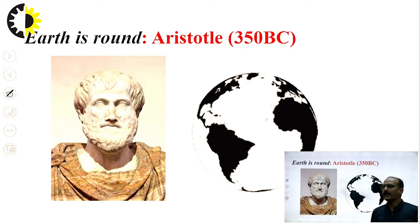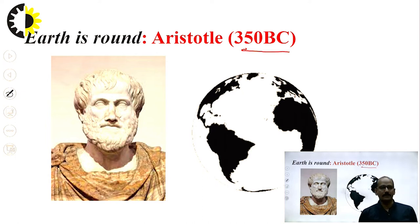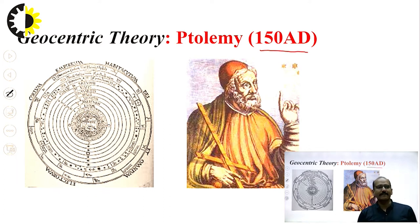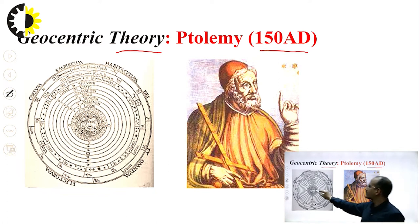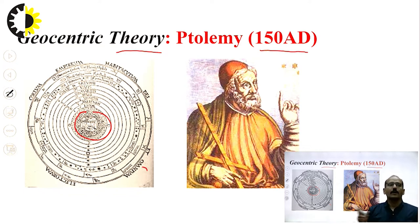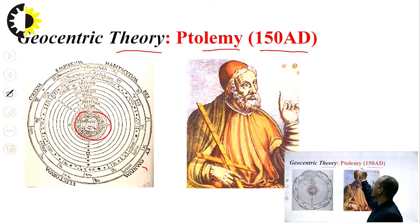In around 350 BC, Aristotle first said that the earth is a round object — before that, people believed the earth was flat. Then Ptolemy, a scientist in 150 AD, gave us the geocentric theory, stating that the earth is at the center of the universe and all stars, including the sun, revolve around the earth.